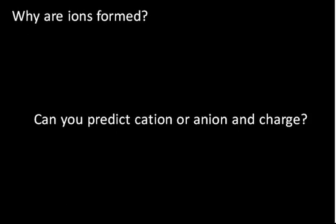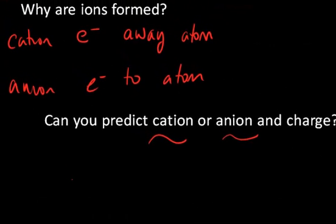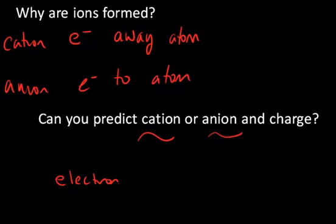You should ask yourself why ions are formed in the first place, and also whether you can predict if a cation or anion will be formed and what charge it might carry. The reason why ions are formed is pretty much the same reason why a ball rolls down a hill — the electrons are moving to a lower energy state, just like a ball moving to a lower gravitational potential energy. You can predict whether a particular element tends to form a cation or anion, and what its charge is, based on its position in the periodic table.